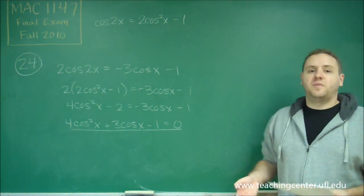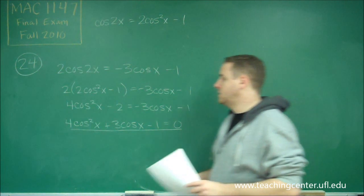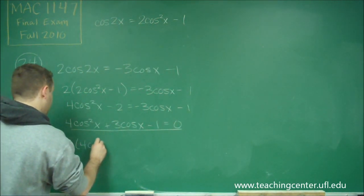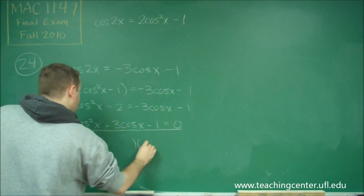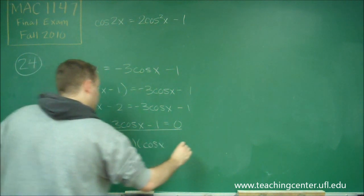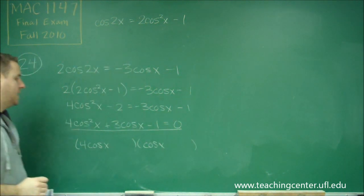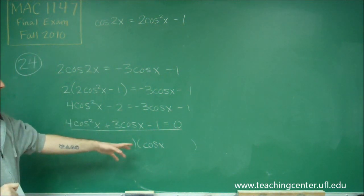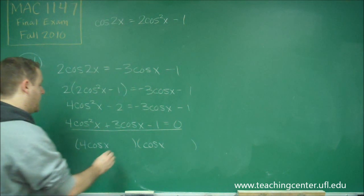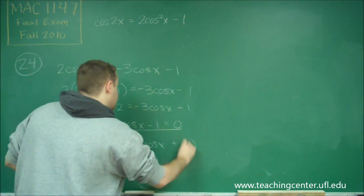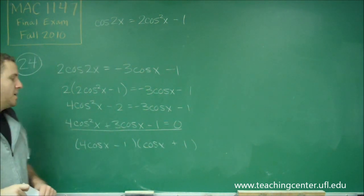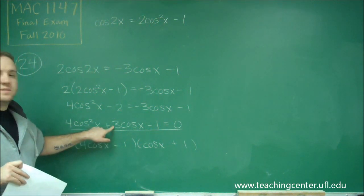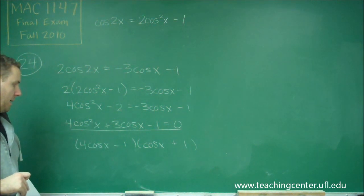Now we want to try to factor this, and we can definitely do this. We're going to get 4 cosine x and cosine x as our factors. We need to get plus 3 and negative 1, so the only way to do that is to put minus 1 and plus 1 there, because our middle term will be negative 1 plus 4, which gives us the 3, and everything works out.